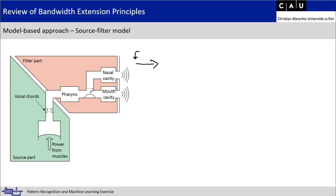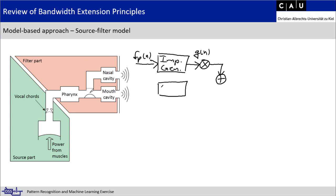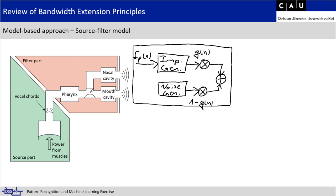The more sophisticated versions of bandwidth extension are the model-based approaches. For that, I need to explain the basic model of generating speech in a human. We have a source part and a filter part. In the source part, we generate a base tone and an excitation signal. In the filter part, we shape this excitation signal into a certain sound. We model this with two kinds of excitation: an impulse generator for voiced sounds and a noise generator for unvoiced sounds, weighted by g(n) and (1−g(n)) respectively.